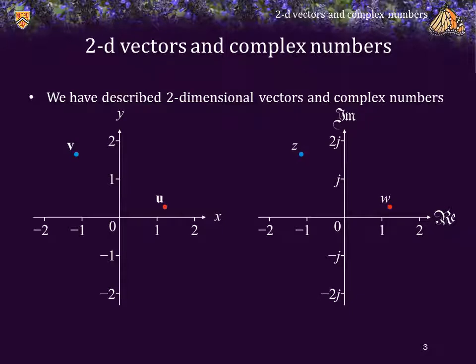We have described two-dimensional vectors, shown here on the left, and complex numbers shown here on the right in the complex plane. Looking at these two vectors u and v, and complex numbers w and z, you may notice that there is a superficial relationship between these two points.